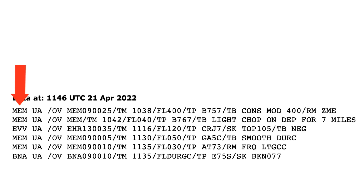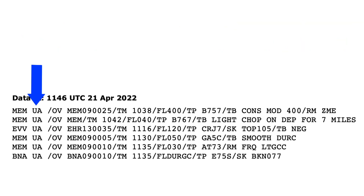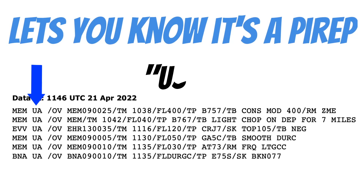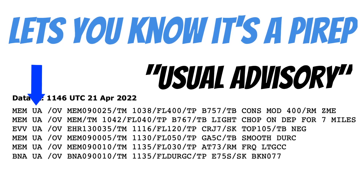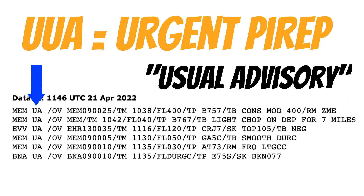Starting with the first column: the first three letters are the closest large airport where the incident occurred, making it easy to determine if there are PIREPs near where you'll be flying. Next, the letters UA let you know you're looking at a PIREP. If you ever see UUA, that indicates an urgent PIREP — you'd really want to pay attention to one of those.